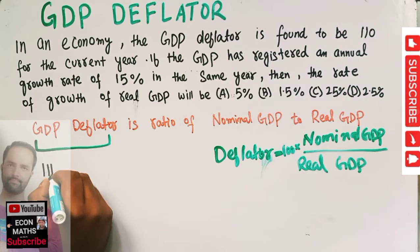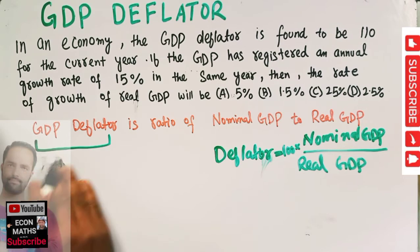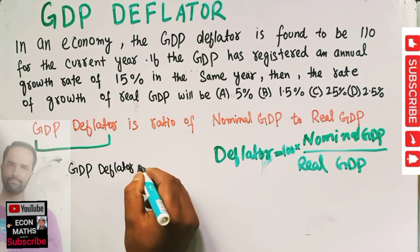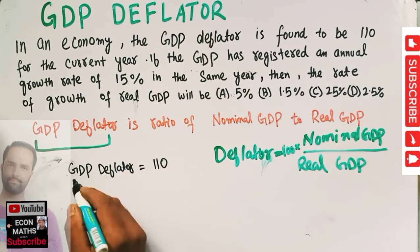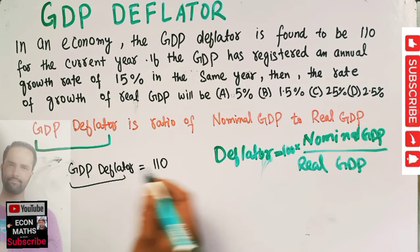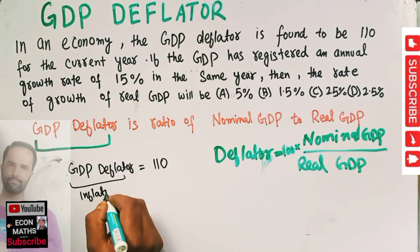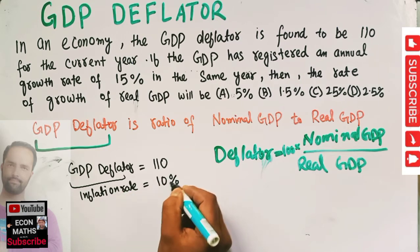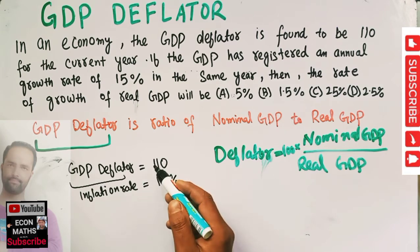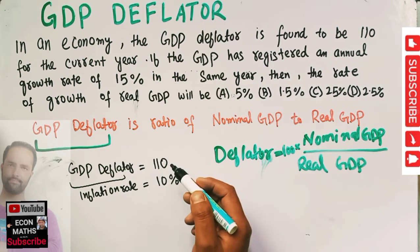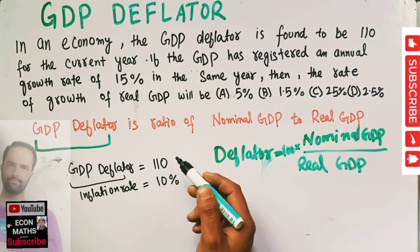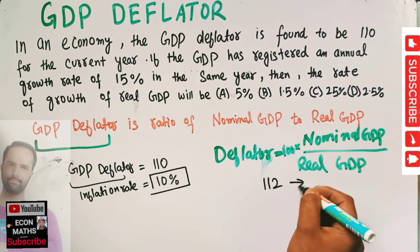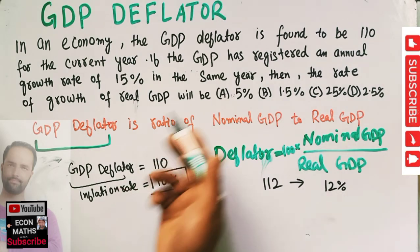If the GDP deflator is equal to 110, it means our rate of inflation is 10%. Simple thing — if the GDP deflator is 110, it means there is a 10% increase in inflation. For example, if we have 112 as the GDP deflator, it means our inflation rate is 12%. Simple.